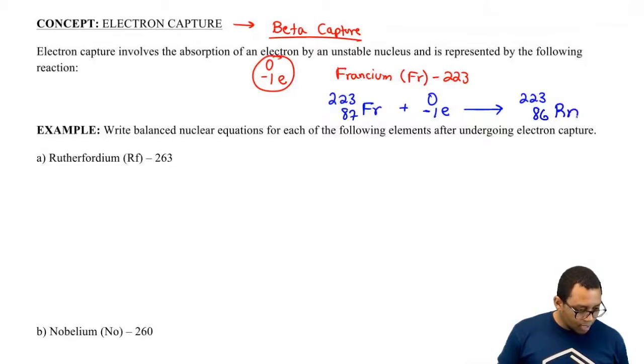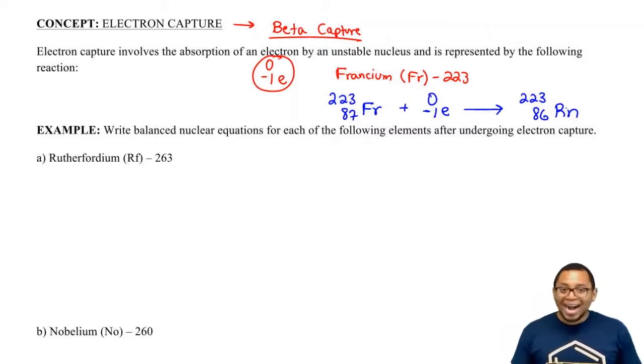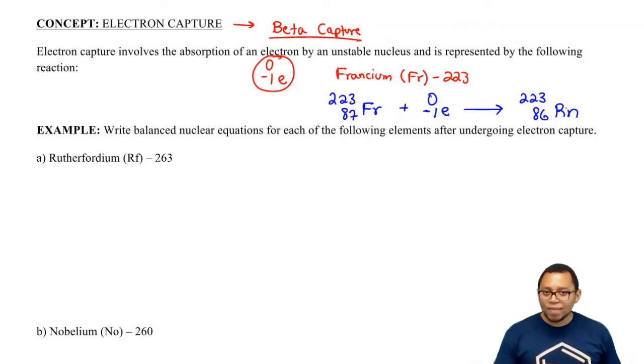So you become radon, Rn. Okay. So that represents the opposite of beta decay. Instead of doing beta decay or emission, we're doing beta capture, aka electron capture.